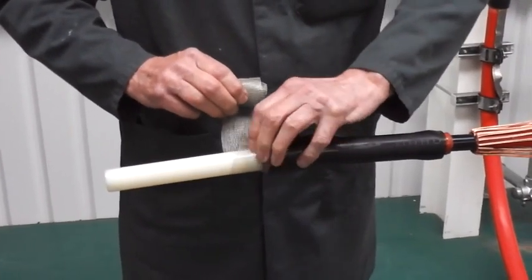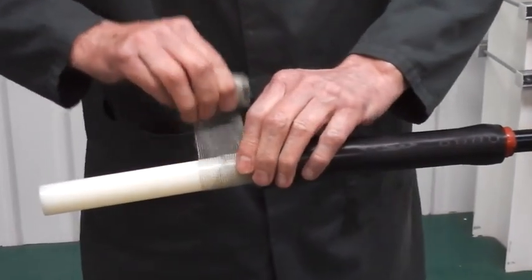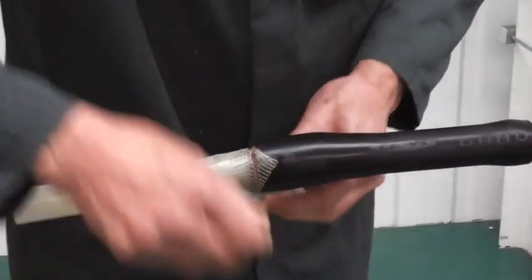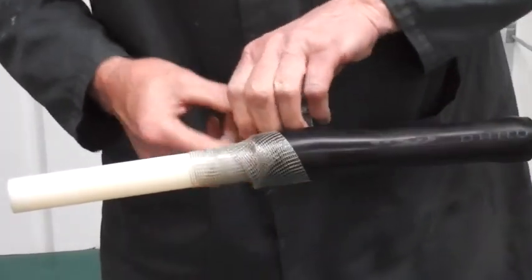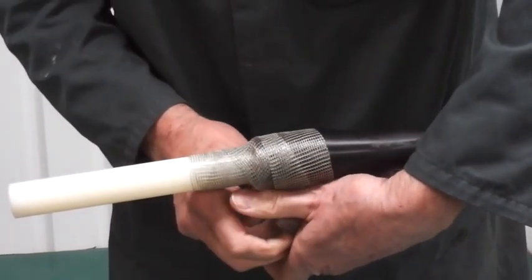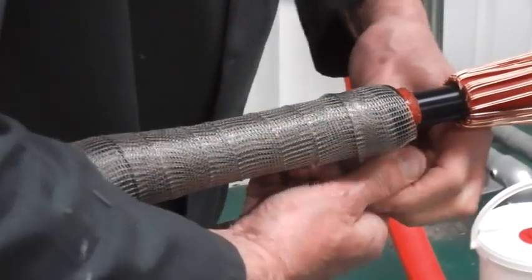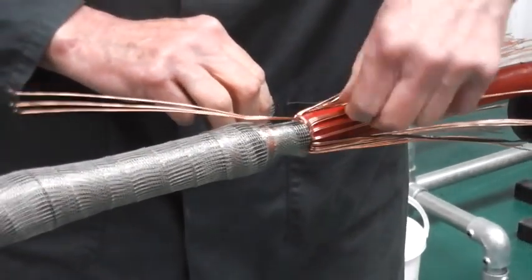Now take the copper screening bandage and tightly wind it over the complete pot end starting at the insulation rod with 50% overlap. Take it right up to the copper screen wires.